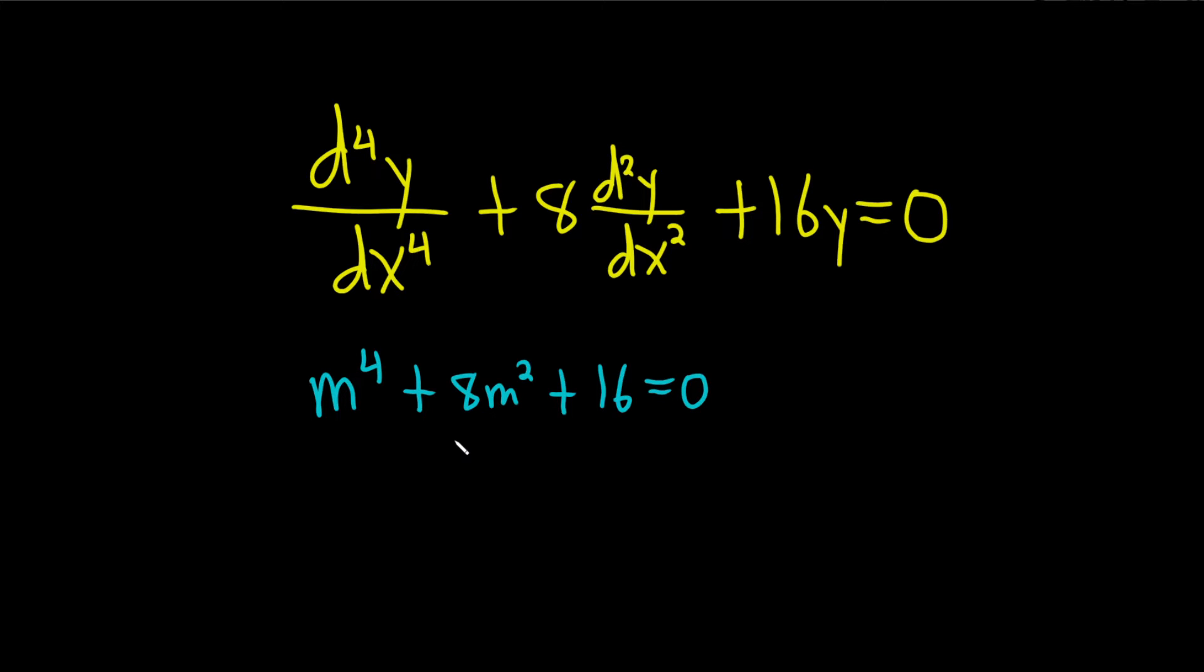And then you try to solve this equation. So I believe this factors maybe something like this. m squared and then m squared. We need two numbers that multiply to 16 and add to 8, so 4 will do it. And then this is equal to zero.